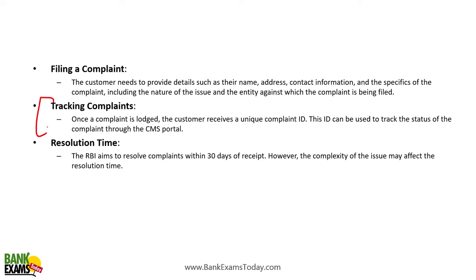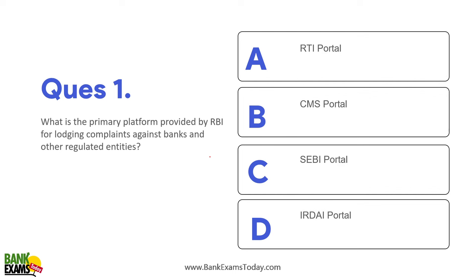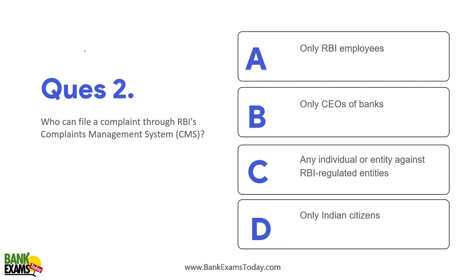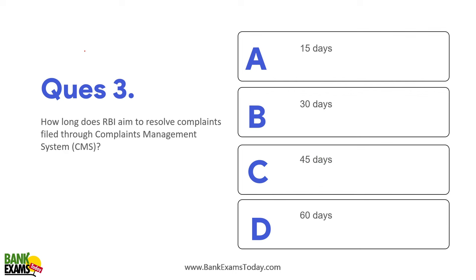You can track the problem with a complaint ID, and the resolution time is 30 days from receipt of the complaint. RBI aims to solve your problem within 30 days. The primary platform provided by RBI for lodging complaints is the CMS portal. Any individual or entity can file a complaint against an RBI regulated entity, and RBI aims to resolve complaints within 30 days.